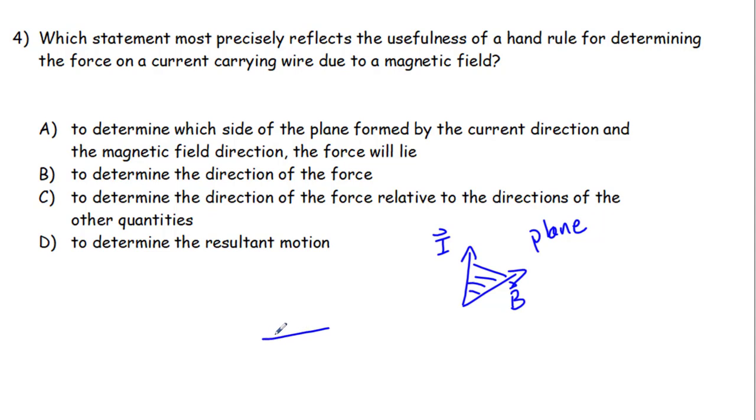So we might have, say, B going this way, and I going this way, but we'd always get a plane.